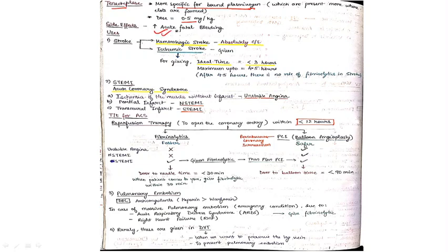Coming to the uses of fibrinolytics: first, we can use in stroke, but in hemorrhagic stroke this drug is absolutely contraindicated. You can use this drug in ischemic stroke. Ideal time for giving this drug is within 3 hours and maximum you can give up to 4.5 hours, but the ideal time is less than 3 hours, which is the golden period.